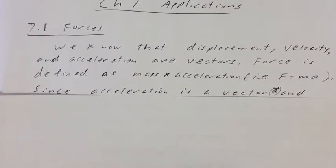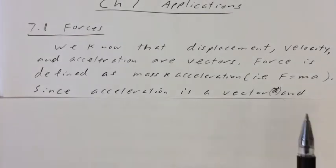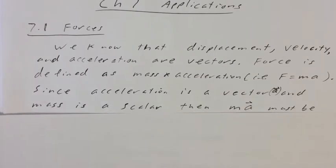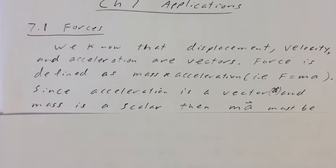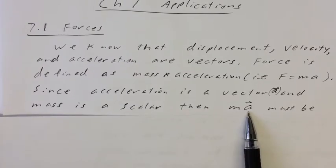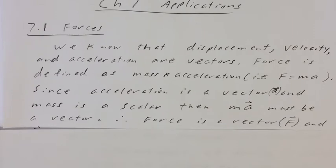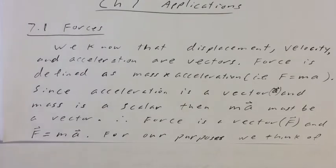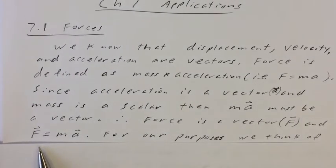So if we know that acceleration is a vector, then we have to write it with a vector sign over top of it — A with a vector sign. And mass is a scalar. Any scalar times a vector is still a vector, so mass times acceleration must be a vector. And therefore force is a vector, because we've defined force as mass times acceleration. So F equals MA with vector signs is the official formula for force.